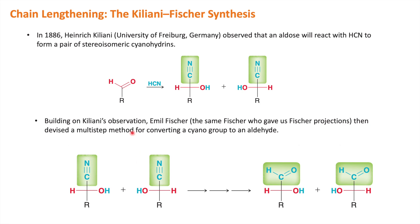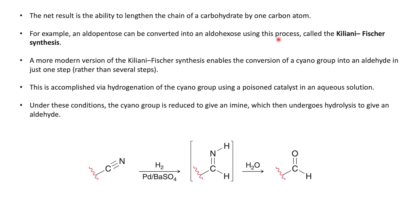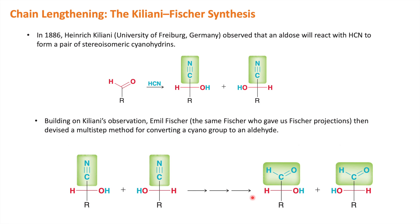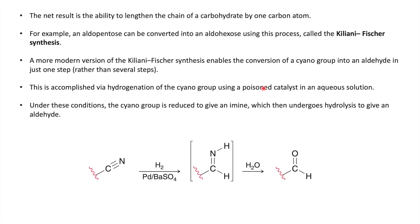The net result of this reaction: you started with an aldehyde with one carbon, and after Kiliani-Fischer synthesis there are two carbons - this is the chain lengthening process. By this method you can convert aldotetroses into aldopentoses and aldopentoses into aldohexoses. The drawback was the multi-step synthesis. In an advancement, the reaction was converted into one step using hydrogenation in the presence of palladium and barium sulfate - a poisoned catalyst - where the cyano group converts to an imine, which reacts with water to give the aldehyde.